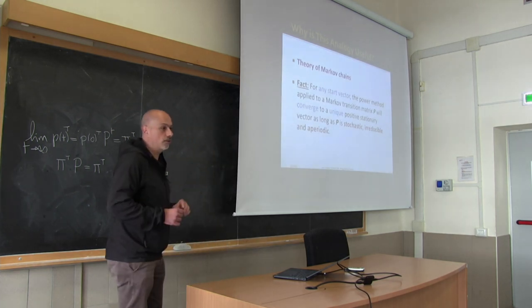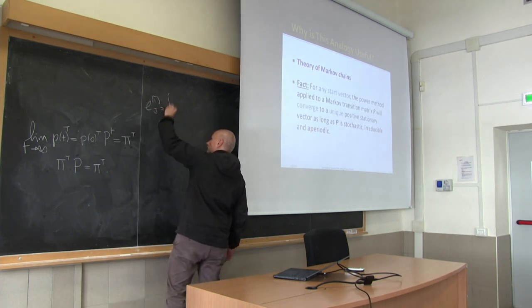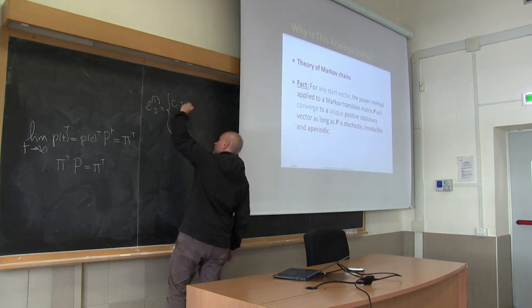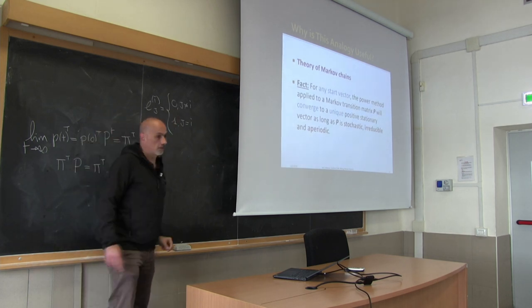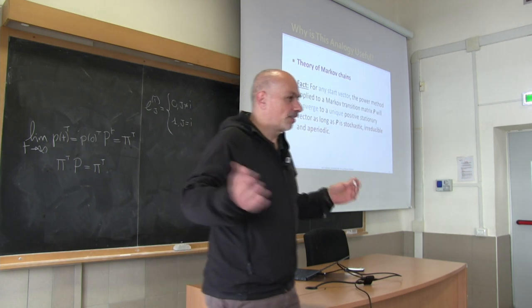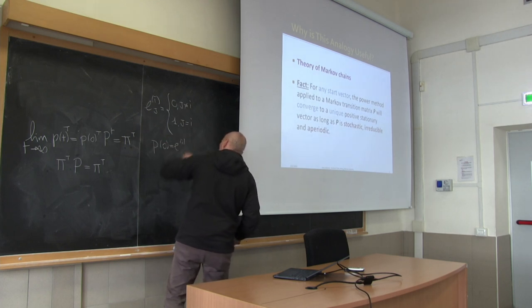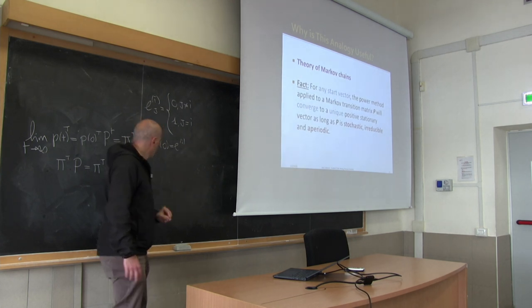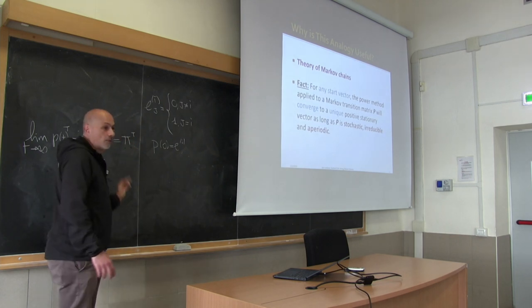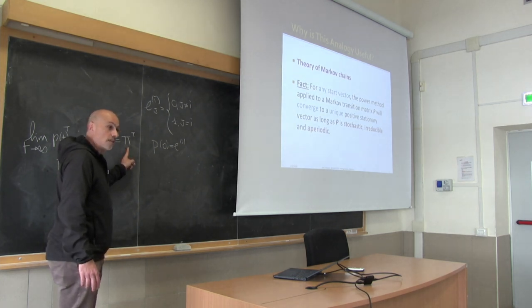For example, the i-th canonical vector — a vector which has only a one in the i-th position — is a probability distribution meaning you start your random walk from the i-th vertex. This result tells us that no matter where you start from, you will always end up in the same stationary distribution, which is a very interesting and remarkable fact.